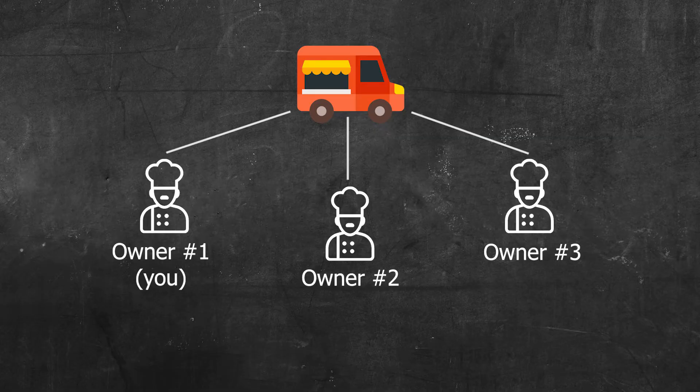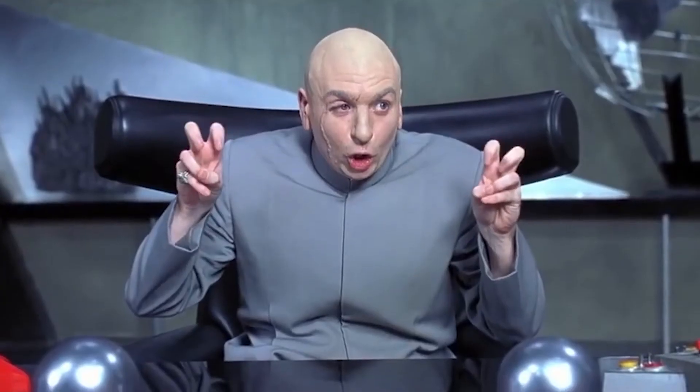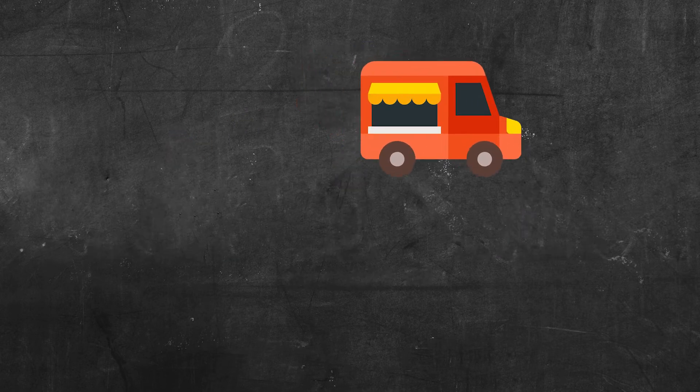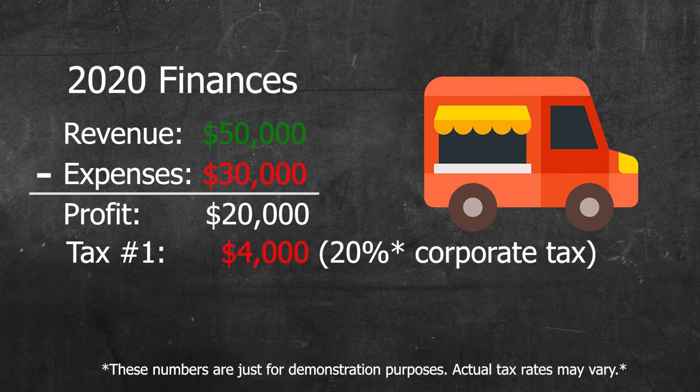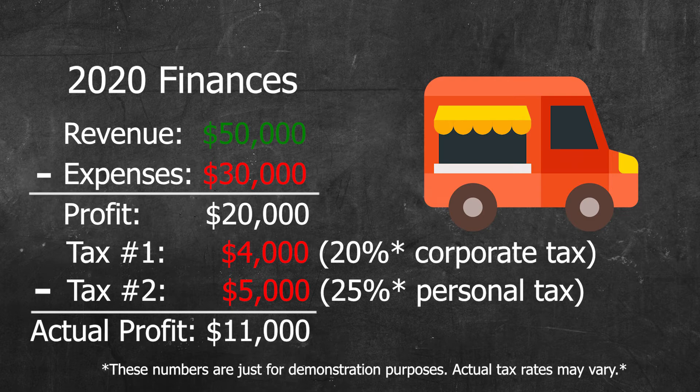Corporation. Now, this is where there's a lot of confusion, even among professional accountants. From a legal perspective, a corporation refers to a C corporation, officially called Subchapter C or C Corp for short. In a C Corp, you and your owners are shareholders of the corporation. You are paid a salary, and at the end of each year, any profit that's left gets taxed twice — once for corporate tax, and again on your personal taxes when you take it out of the company.